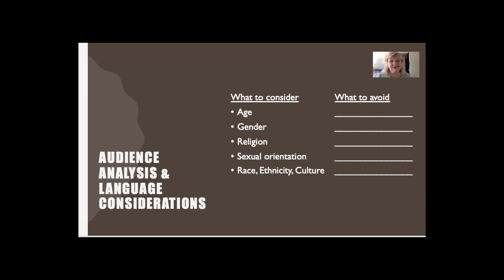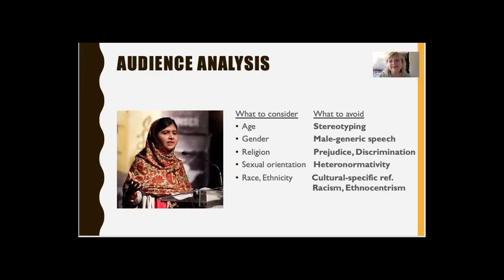There are some other things we've got to consider when doing audience analysis. Think about age — on the left-hand side you'll see demographics to think about, and on the right, what you could do in your speech to avoid offending someone. We also need to be considerate of gender identities, religion, sexual orientation, race, ethnicity, culture, and I could continue this list to include politics and even more. Here are some things to avoid so that we don't fall into a trap of offending other people and instead help promote a safe learning environment in this class.